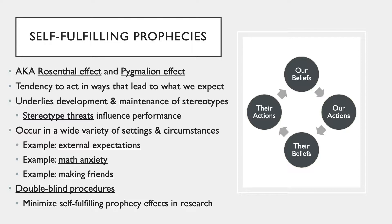Double-blind procedures are used in research studies to minimize the effects of self-fulfilling prophecies. Double-blind means both participants and the researcher are unaware of the treatment condition, so the experimenter can't inadvertently influence participants and participants won't differ based on their beliefs or expectations. This is why placebos are used — everyone in the study swallows a pill and is unaware if it is active or not, helping reduce the effects of expectancies. It's also important the researcher is unaware, because otherwise a comment like 'Oh wow, you feel better?' signals to the participant what they should feel.